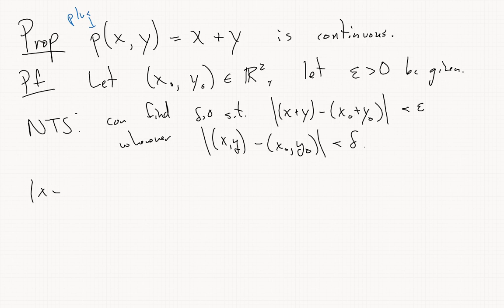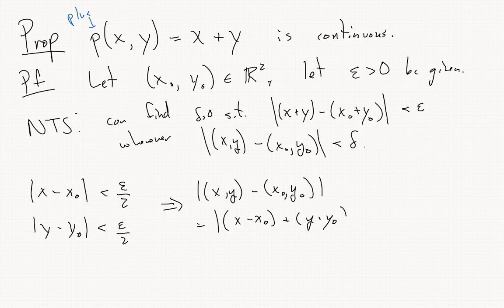If we require that |x - x0| is less than epsilon over 2 and also |y - y0| is less than epsilon over 2, then we can rewrite (x+y) - (x0+y0) as (x-x0) + (y-y0). This is less than or equal to |x-x0| + |y-y0| by the triangle inequality, and then that is less than epsilon/2 + epsilon/2 equals epsilon.